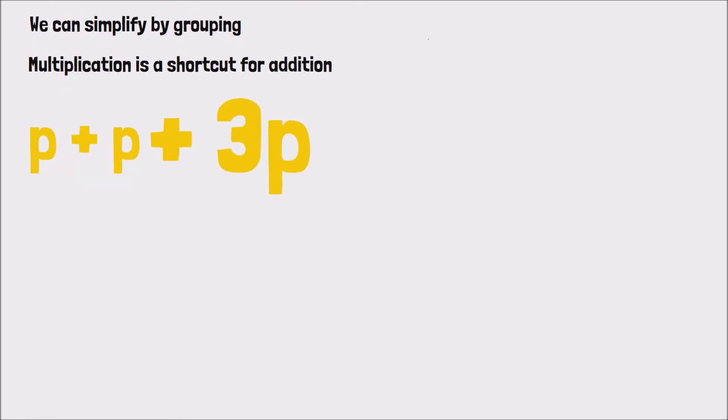This means two groups of pineapples being added to three groups of pineapples, which can be added together to give a total of five groups all together, and then we would further simplify this to 5P.